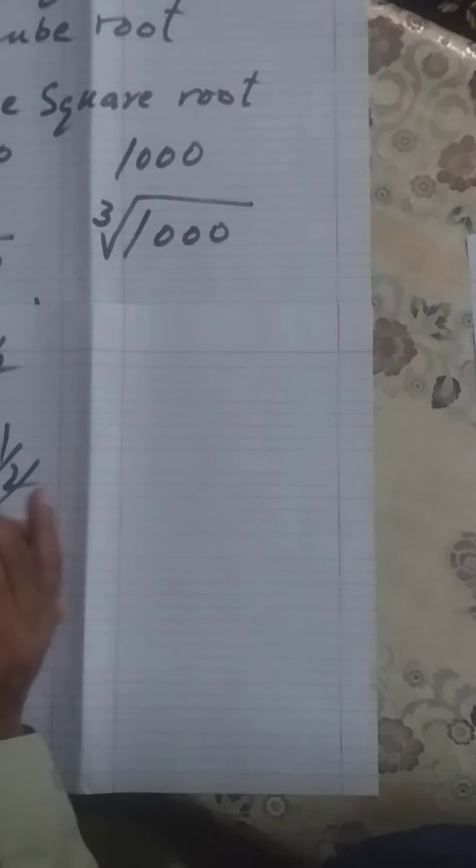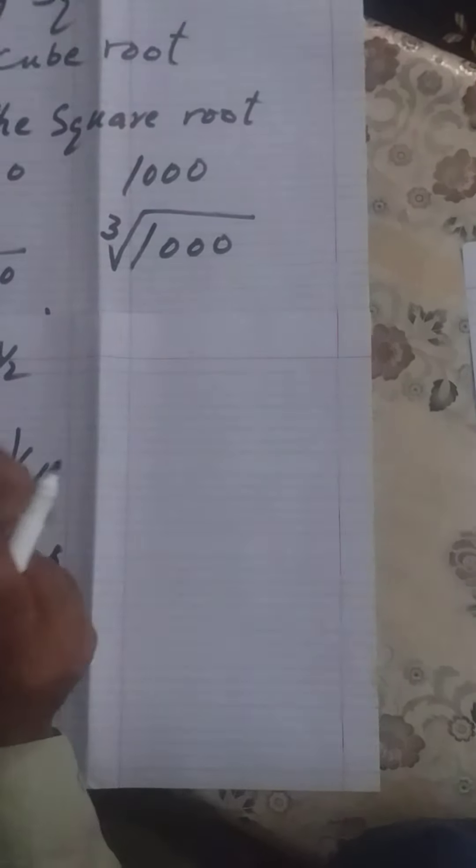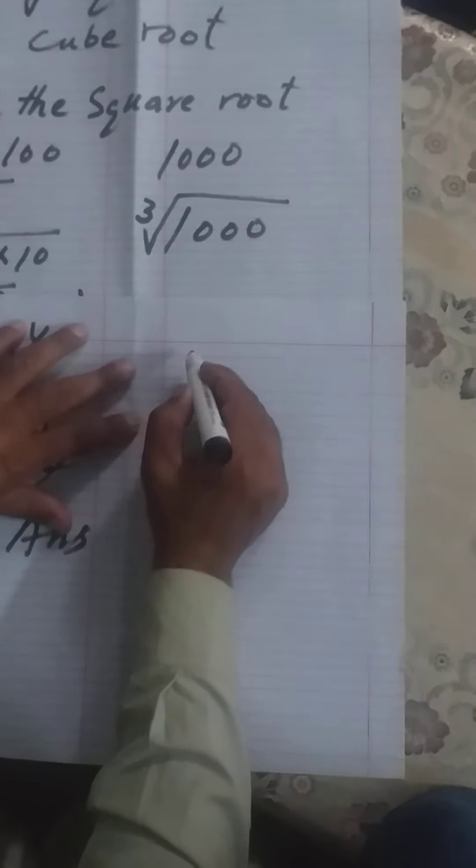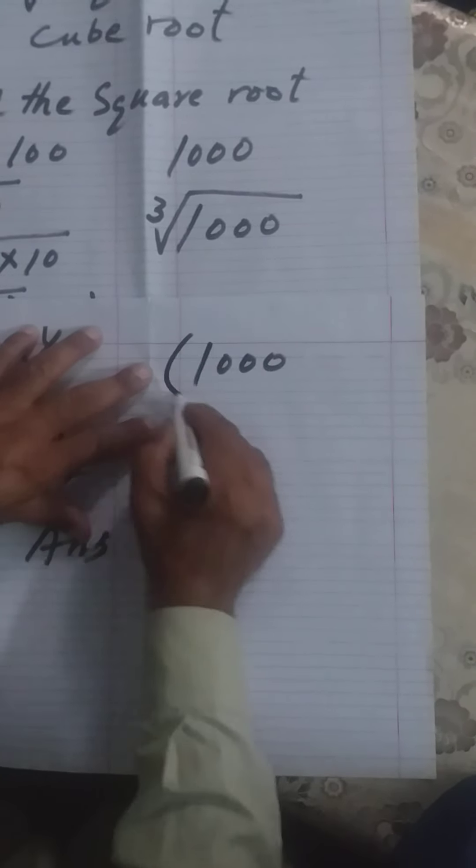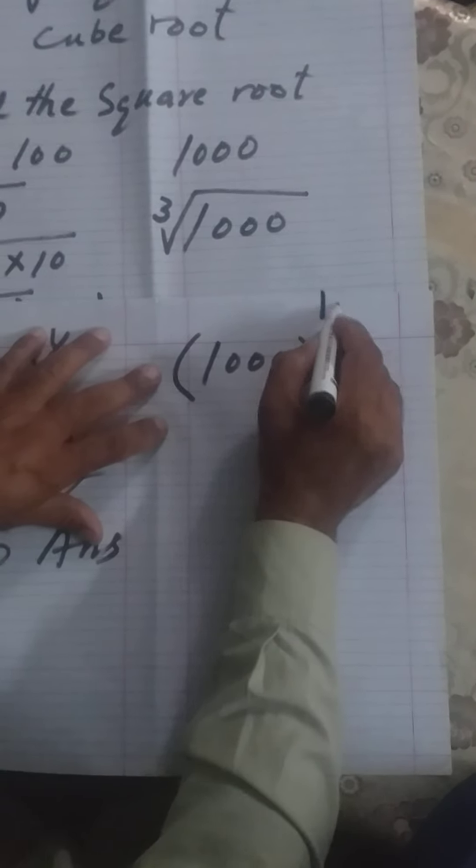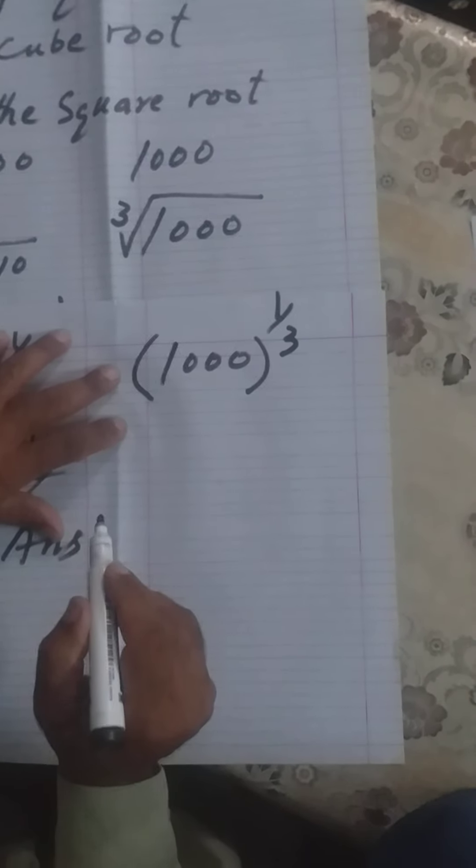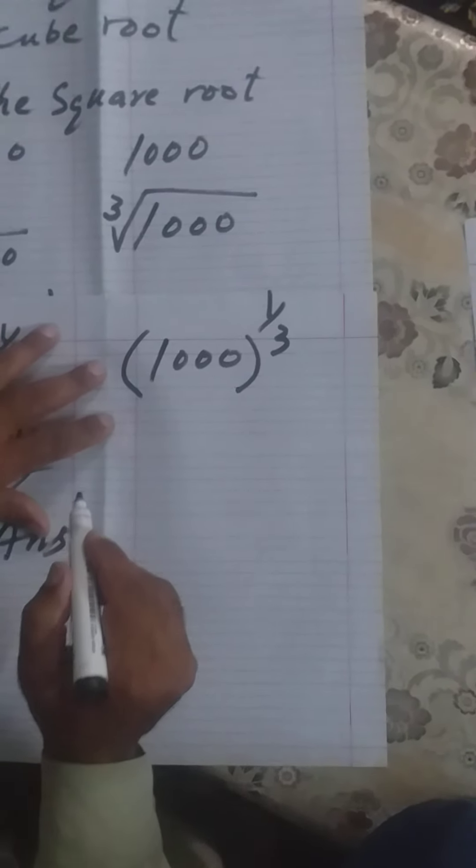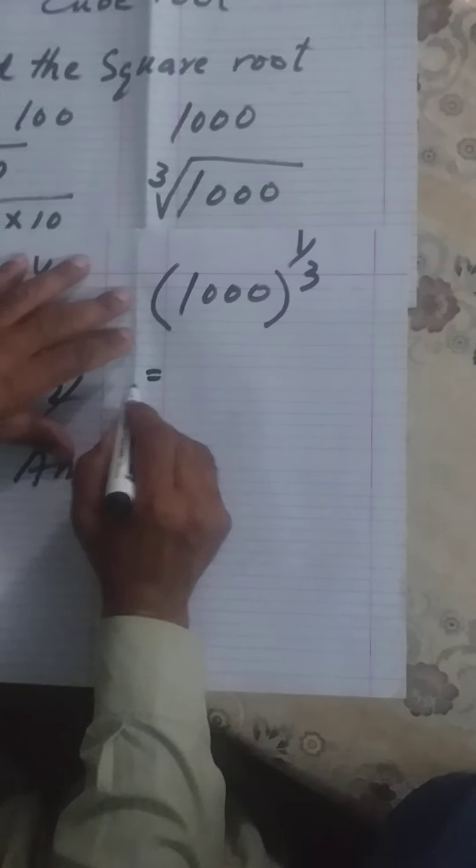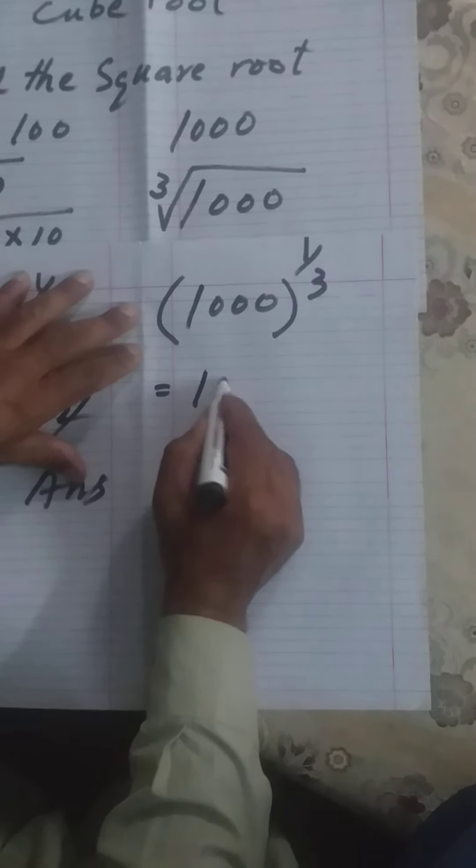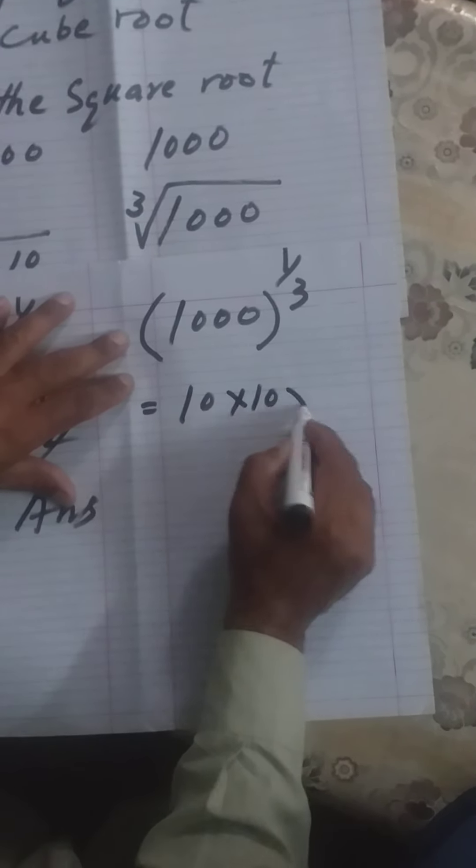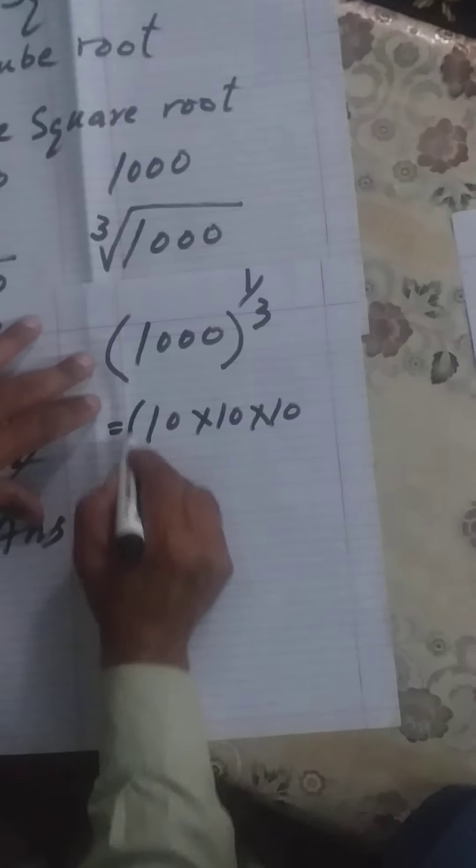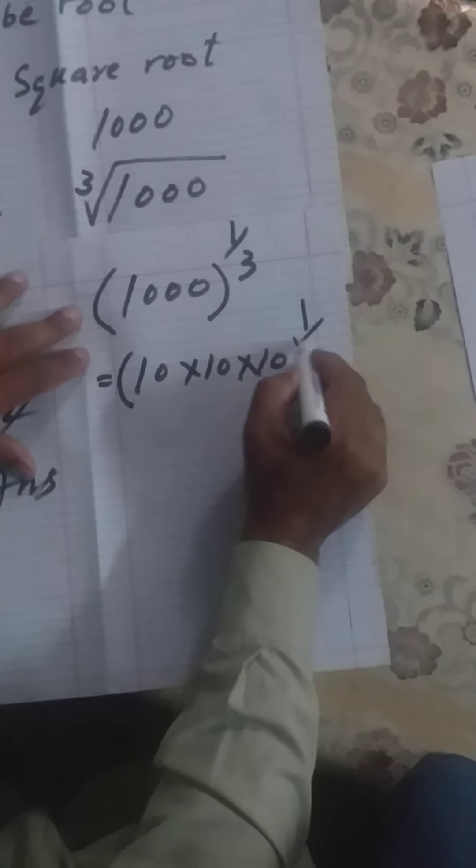Now we solve this. We write 1000 whole to the power 1 by 3. Now we move ahead. 10 into 10 into 10, and whole to the power 1 by 3.